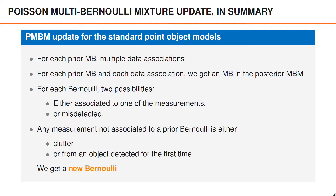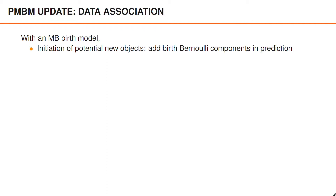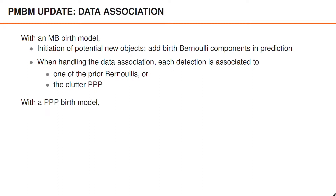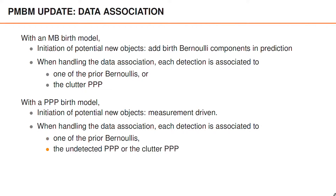Before going into the details, we look at how the data association can be formulated as an association of measurements to objects. When we had a multi-Bernoulli birth model, the initiation of potential new objects is handled by adding birth Bernoulli components in the prediction, and each detection was associated to one of the Bernoullis in the prior or to the clutter. Now we have a Poisson point process birth model instead, which means that the initiation of potential new objects is measurement-driven. We only add new Bernoullis if there are measurements. In the data association, each detection is associated to one of the prior Bernoullis — an object that has been detected before and is detected again — or the association is to the undetected Poisson point process or the clutter Poisson point process.